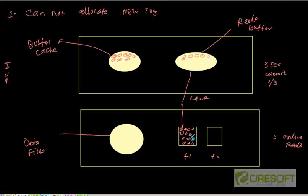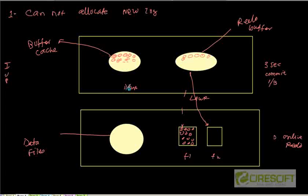Eventually file F1 is going to be filled. When F1 fills, a log switch is going to happen, and then LGWR, instead of writing to file one, is going to start writing to file two. At this point, DBWR is there but DBWR is not doing anything yet — it's still going on. DBWR is not in the picture right now.